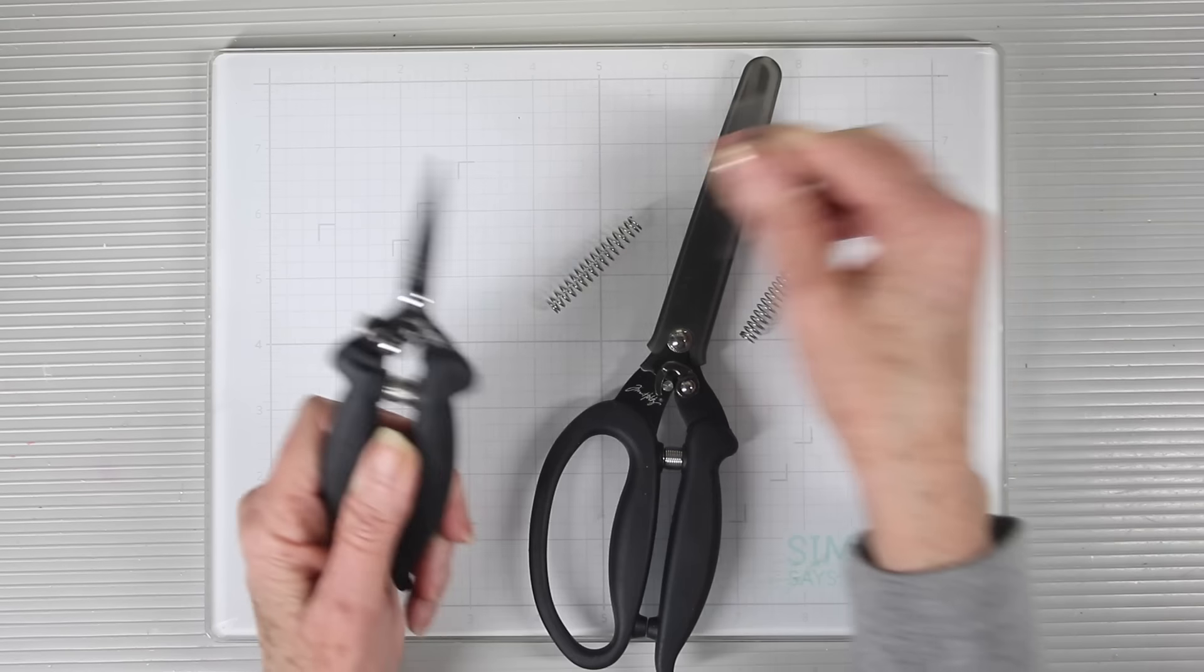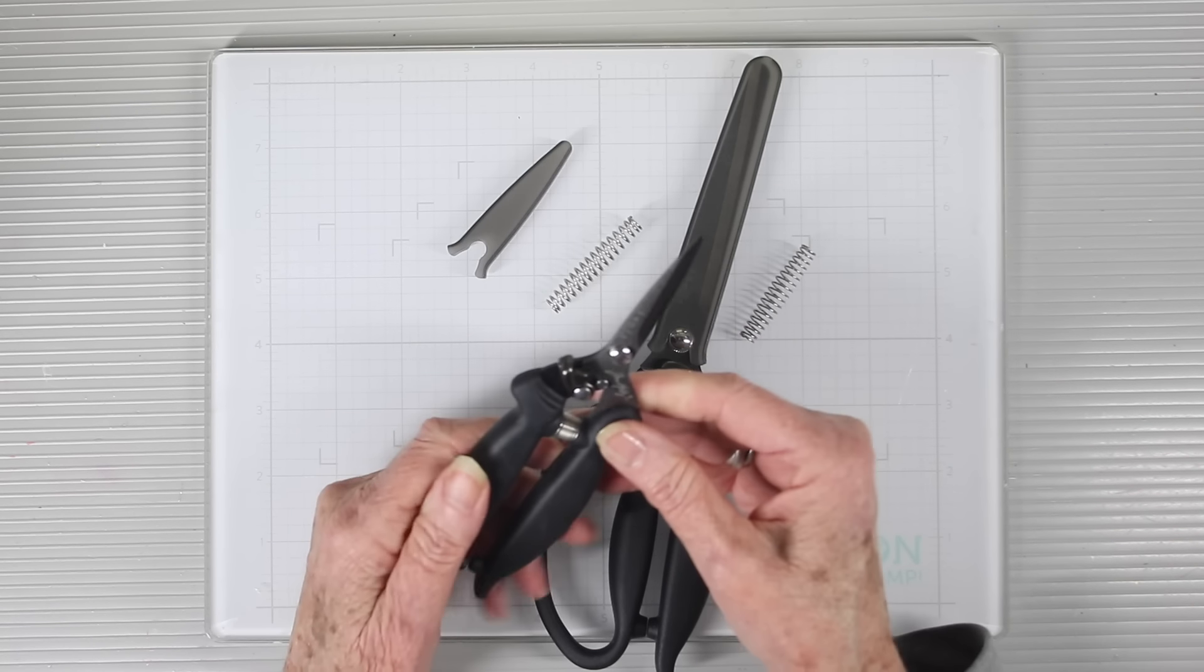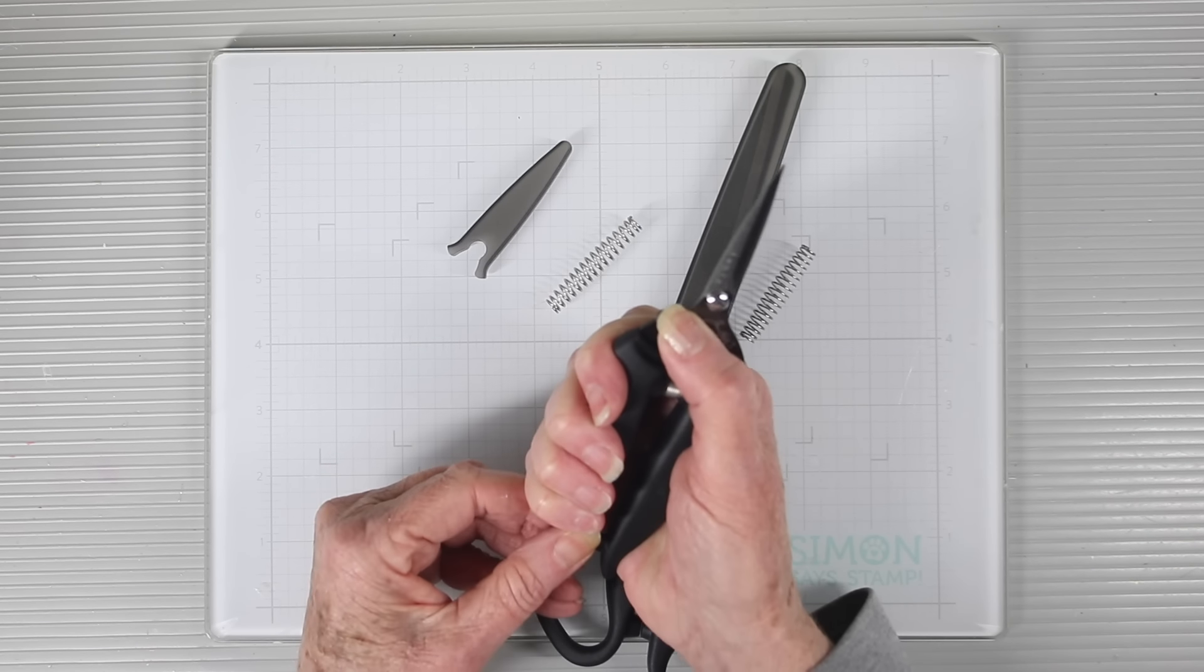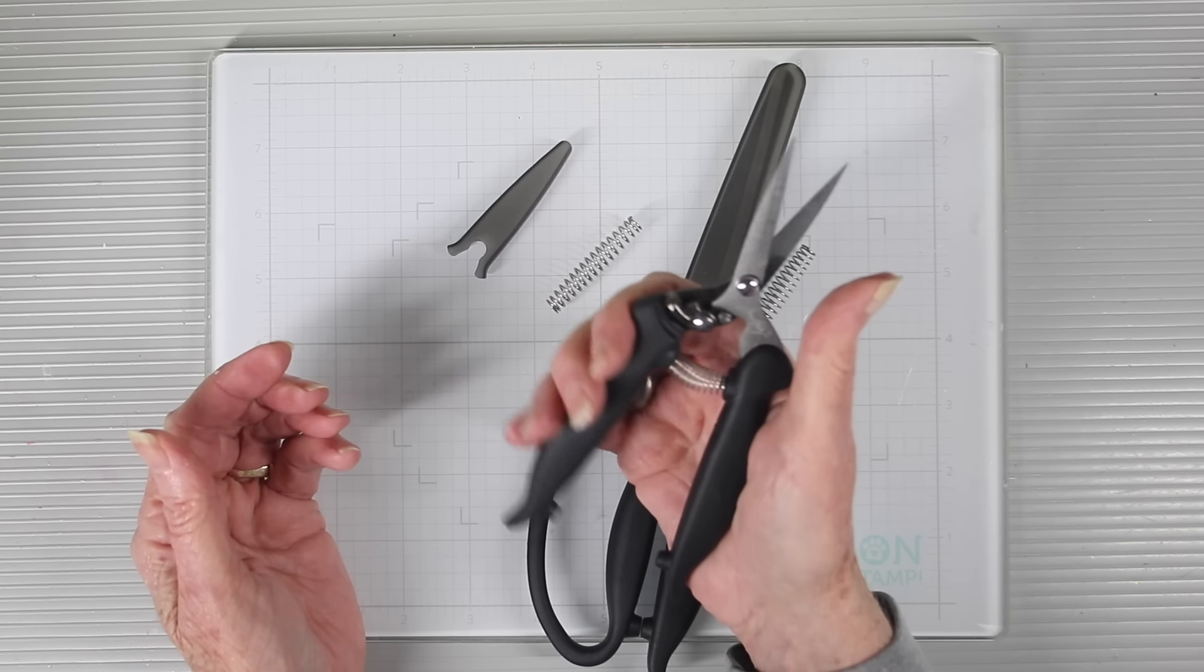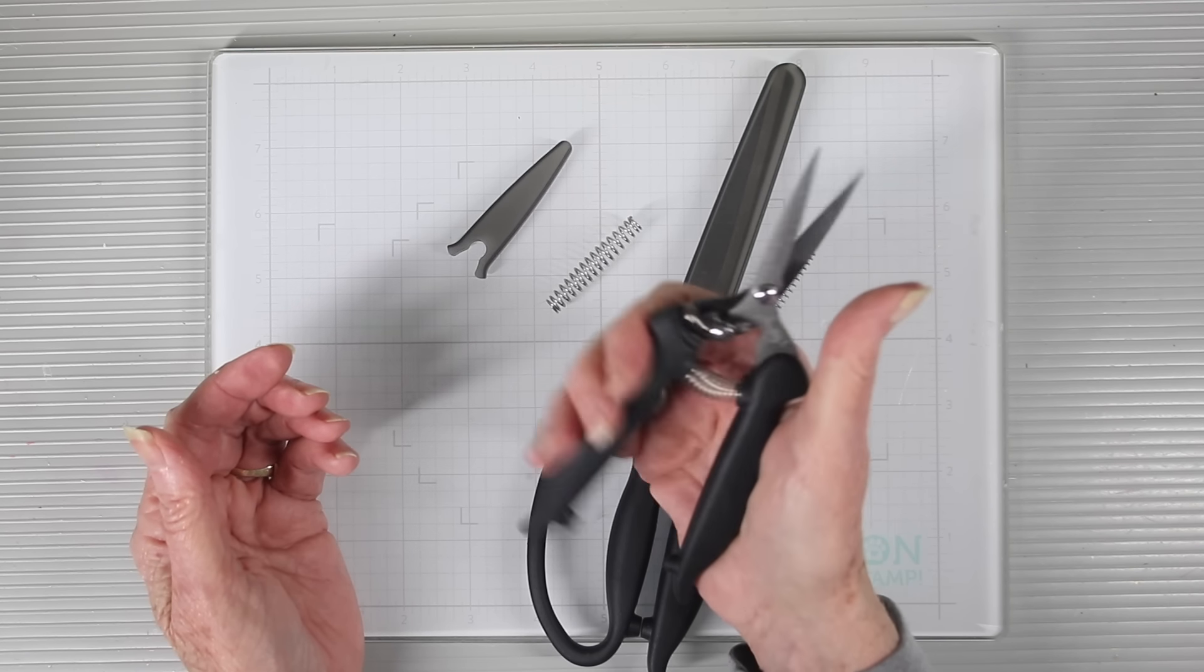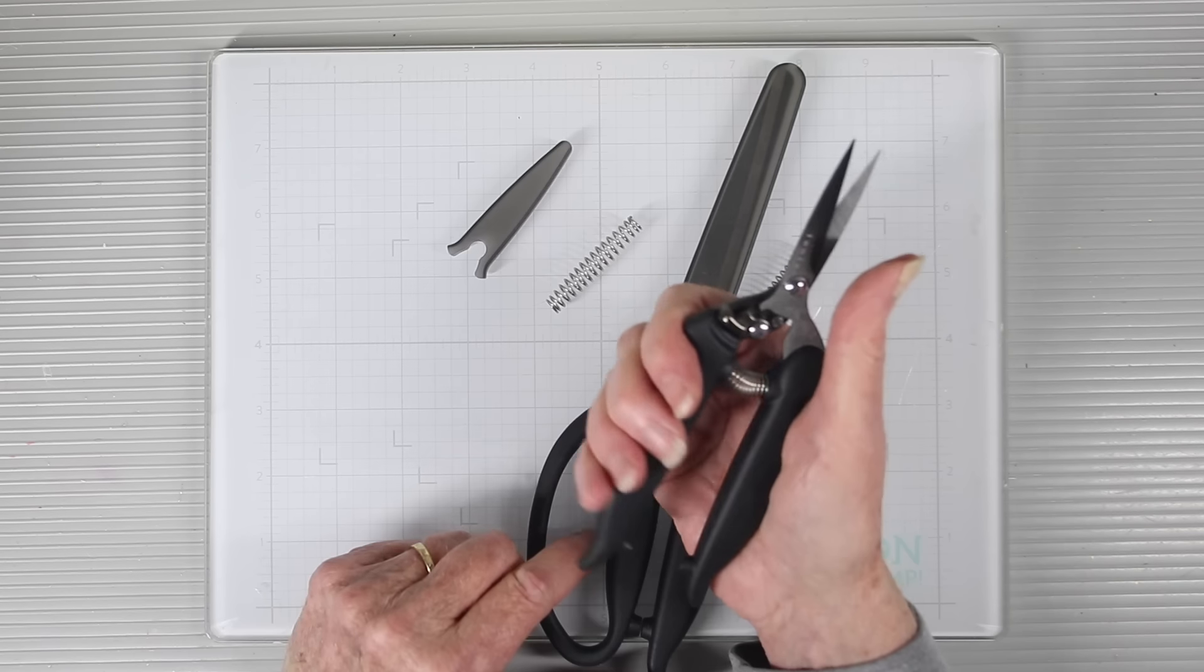To use them, you'll want to remove the protective cap, and then there's a mechanism that you can move with your thumb, and that releases the scissors so they open. The spring keeps the scissors open, and with a gentle squeeze, you can close them to do your cutting.